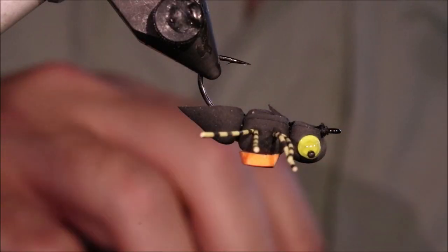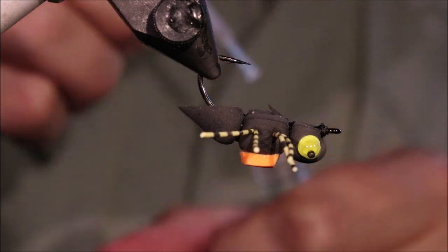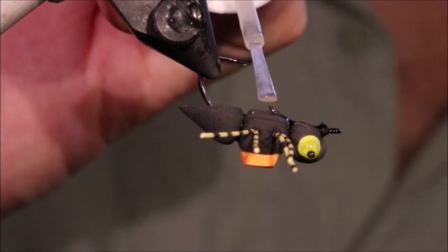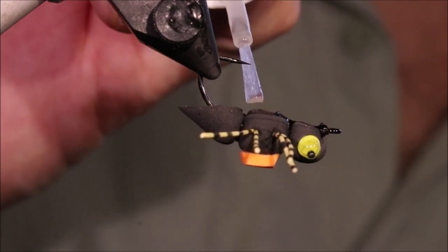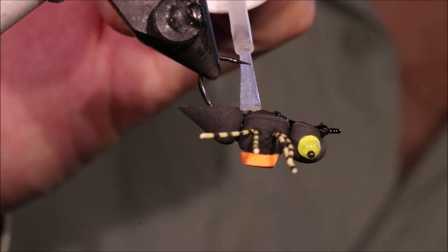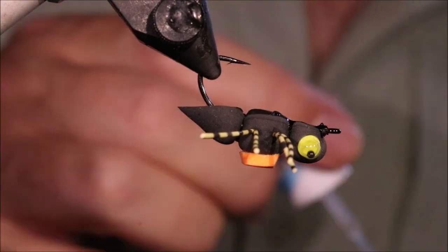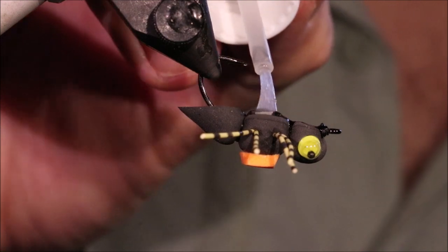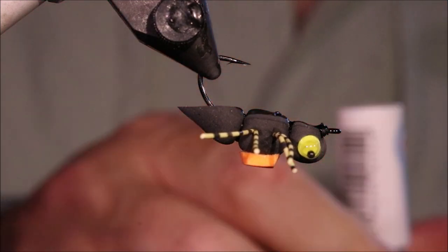Now this is optional. But if you want it to add a bit more durability, you can come along and flood that bottom with head cement. Just letting it get into all that thread to protect the glue.